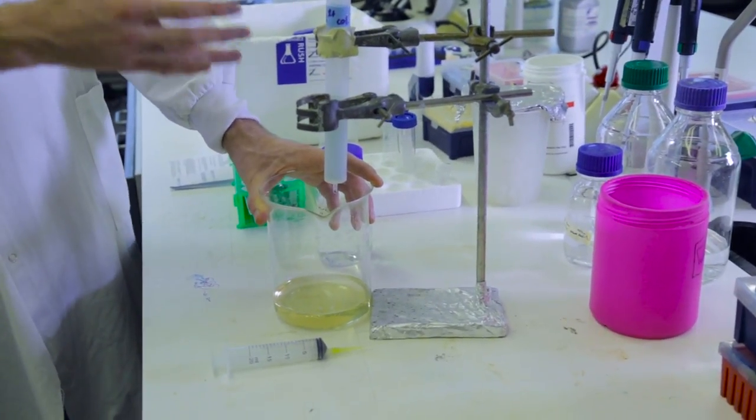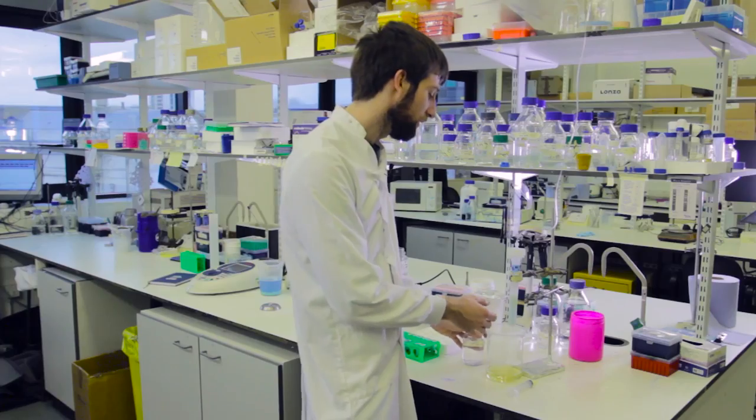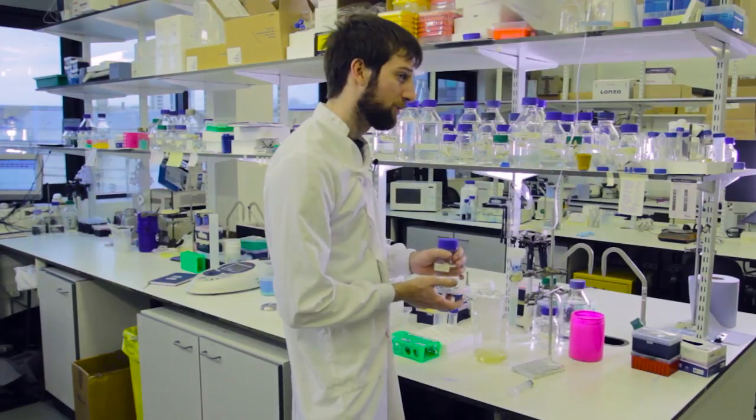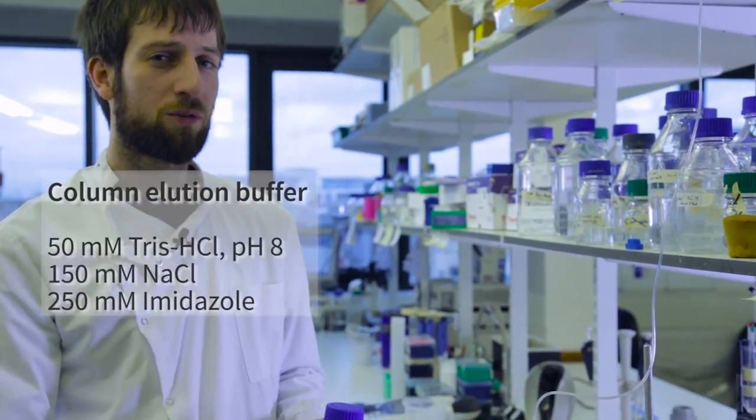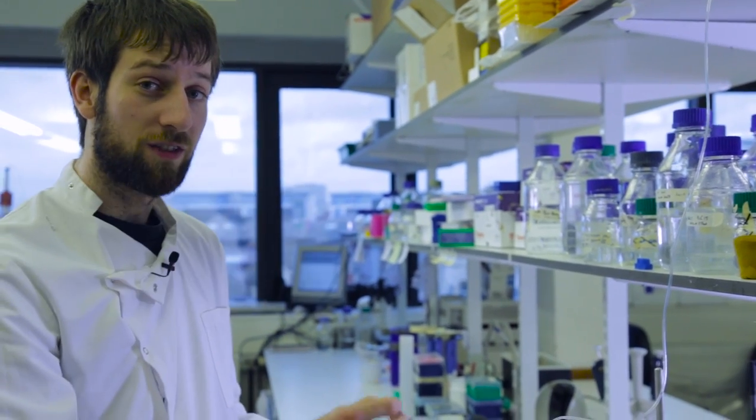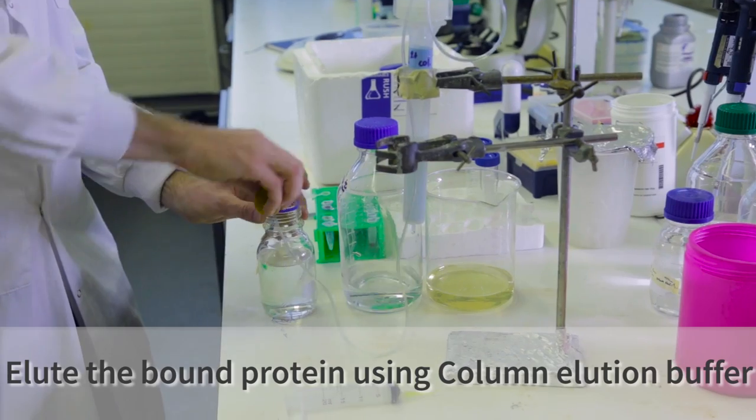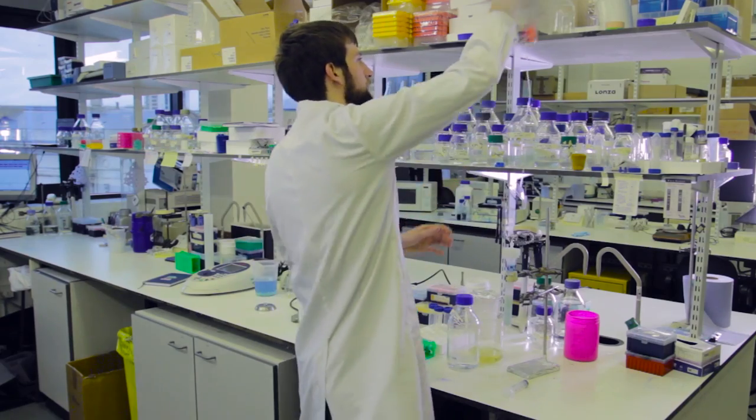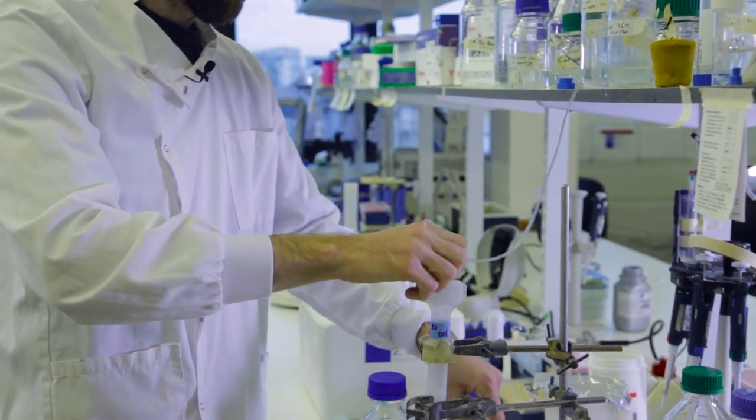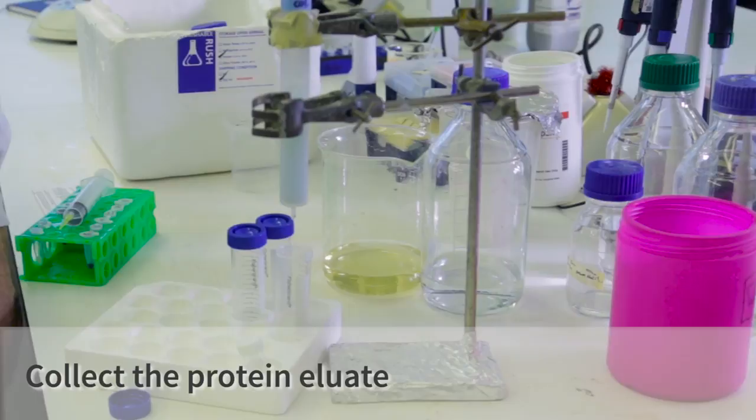So all that's left is our protein bound to the nickel resin. We need to elute it off the nickel resin. We do this using our elution buffer. Now the elution buffer is the same as wash buffer, but it contains 250 millimolar of imidazole. Now imidazole displaces the histag from the nickel, allowing our protein to flow off the column. Now we want to capture the protein as it comes off the column. We do this in these tubes.